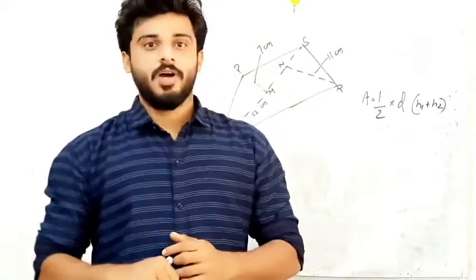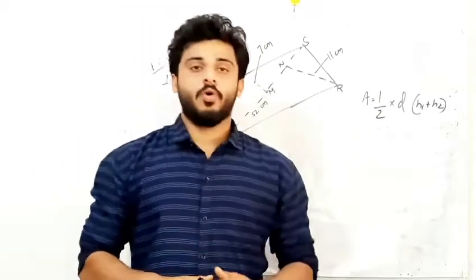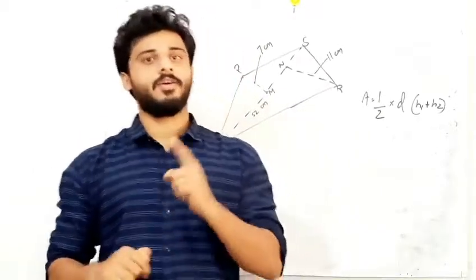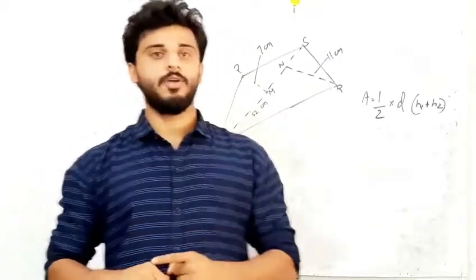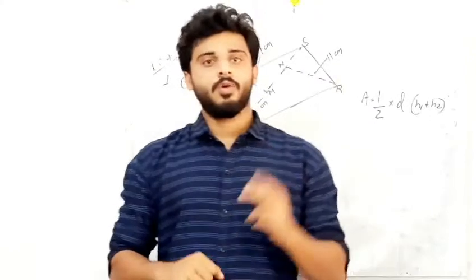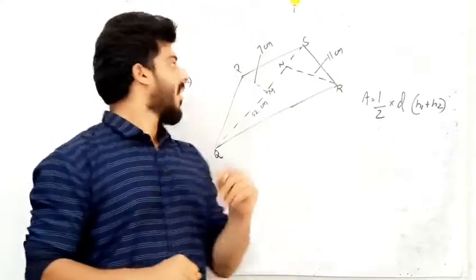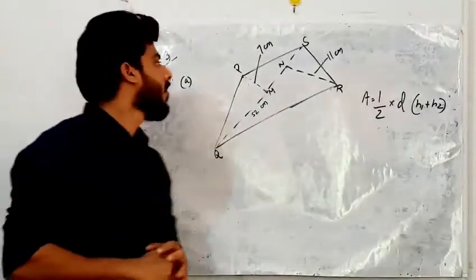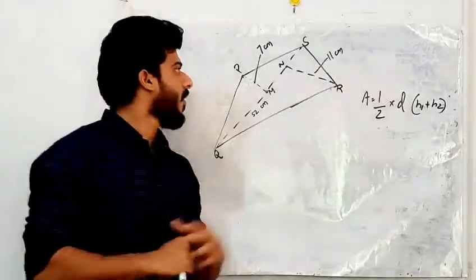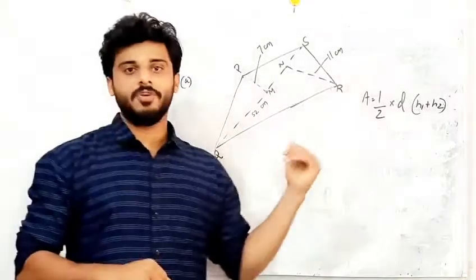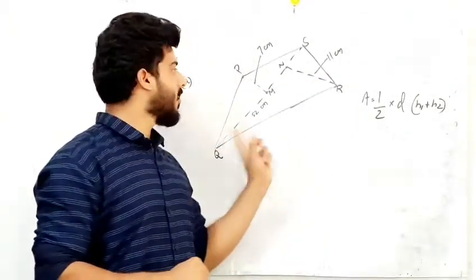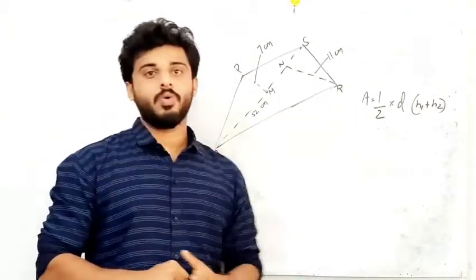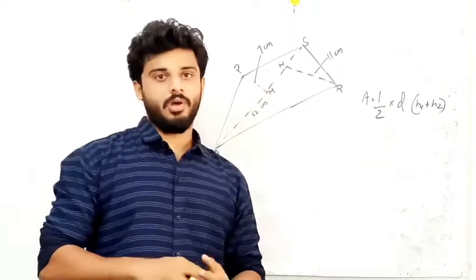Hi students, now we are on to our next exercise, Exercise 14.3, Question number 1. We have to find the area of this shape, and this shape is known as the quadrilateral.